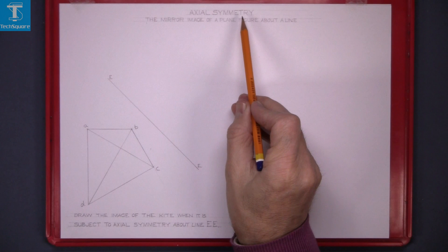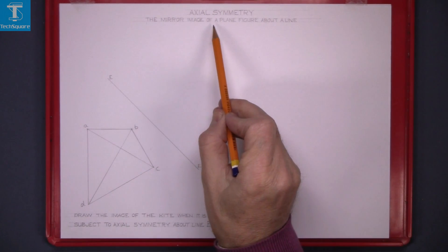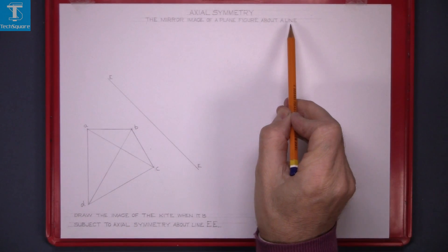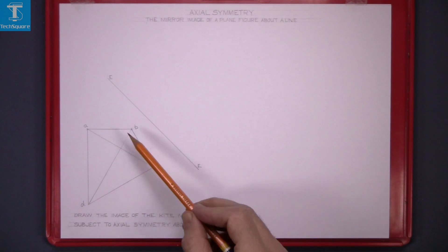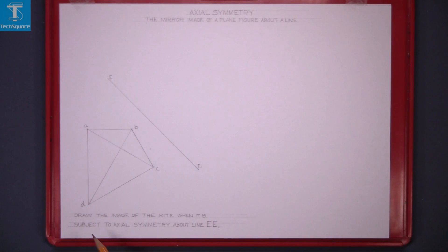Axial symmetry: the mirror image of a plane figure about a line. So we're given this plane figure, draw the image of the shape when subject to axial symmetry in line EE.